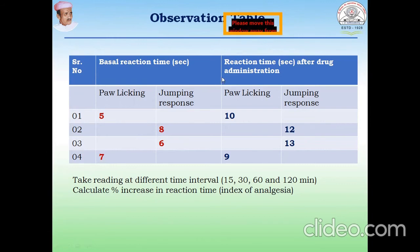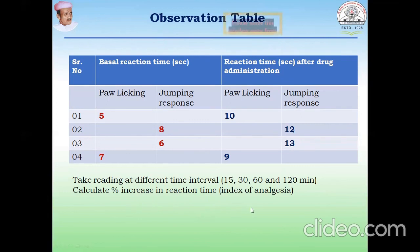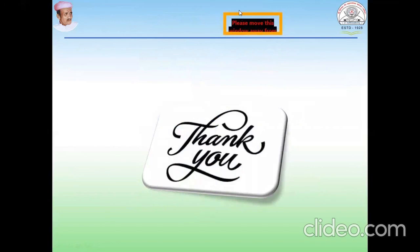Then you give your investigational drugs. After giving the drugs, you can again carry out the same procedure and observe how much time is required for the particular response. If the drug has analgesic activity, it will increase the time for the response. If your drug does not have any analgesic activity, it will not show any response. Once you administer the drug, you take readings at different time intervals — particularly at 15, 30, 60, and 120 minutes. Then you calculate the mean, and from all the readings, you can calculate the percent increase in reaction time, which is the index of analgesia of your tested drugs.